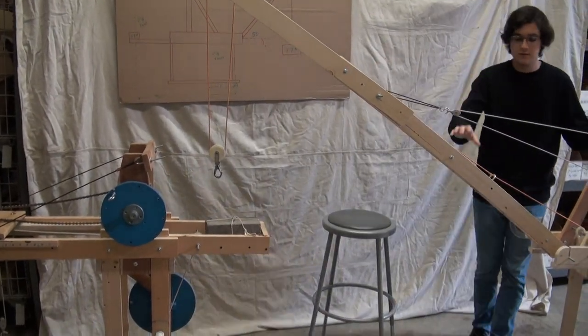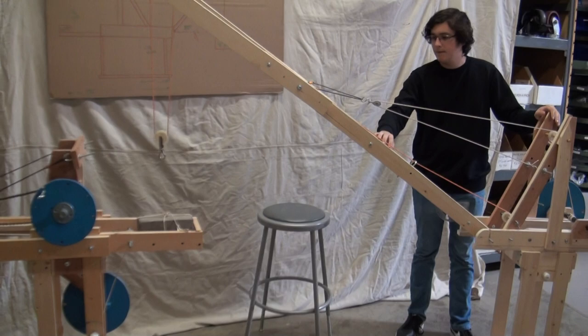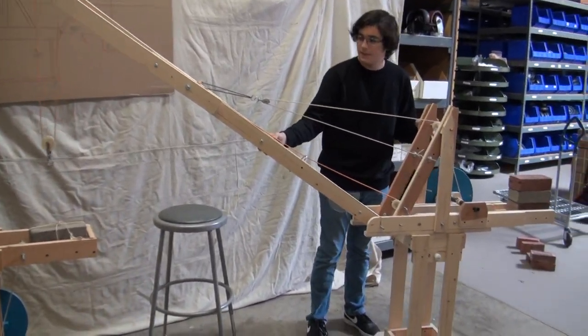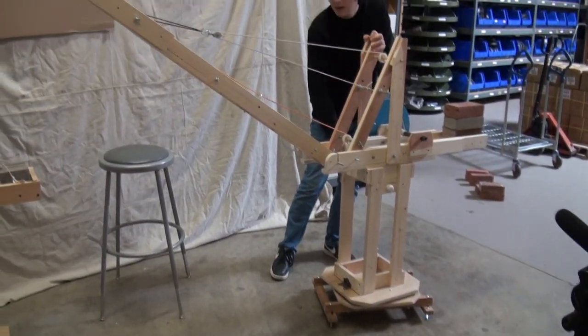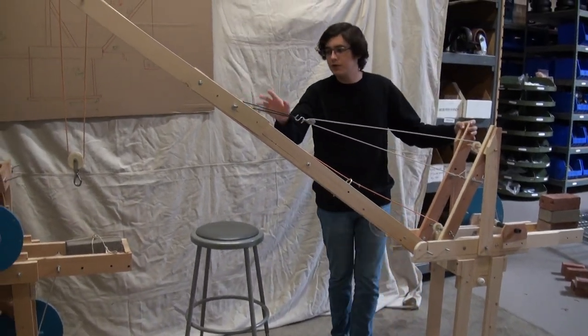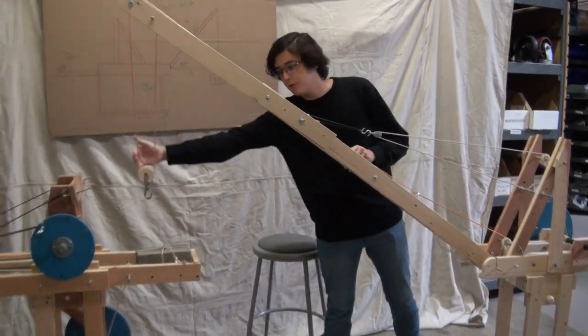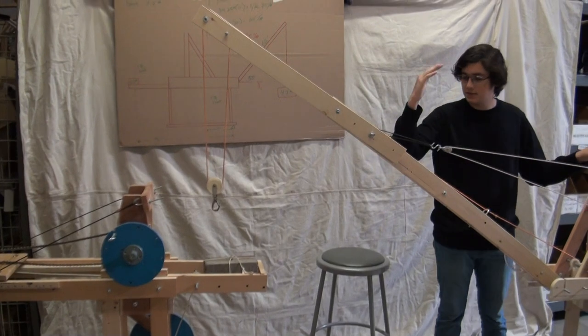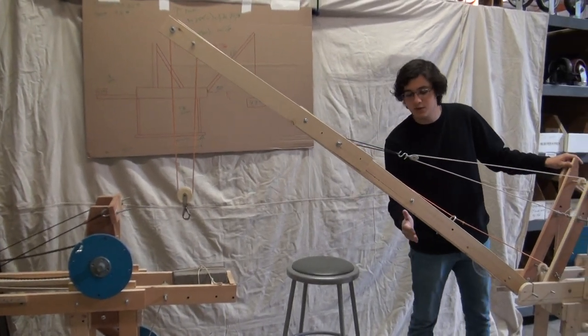As you can see, the crane is able to rotate around. It's able to lift up a load and it's able to lower the jib to get the load farther away or raise the jib to get the load closer to the body of the crane.